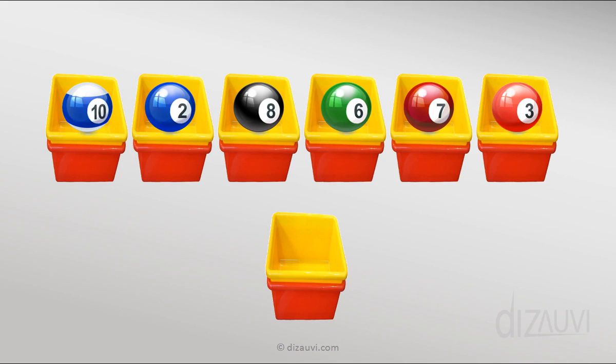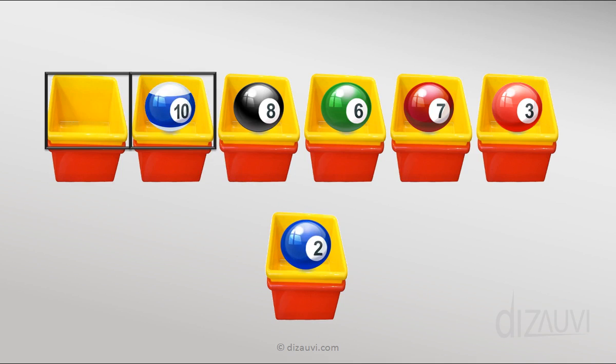So, as suggested, let's follow this process and see how it helps us sort the cue balls. We compare the first two cue balls in the bin. Now 2 is less than 10, so we swap them using the extra bin provided.